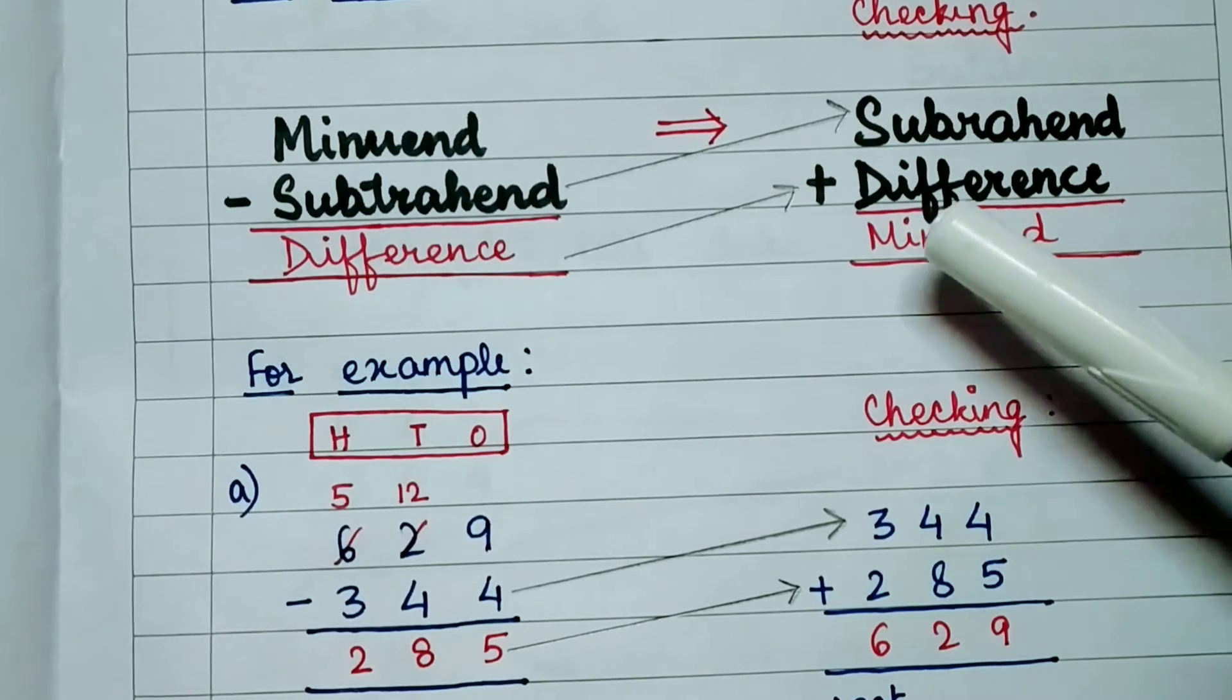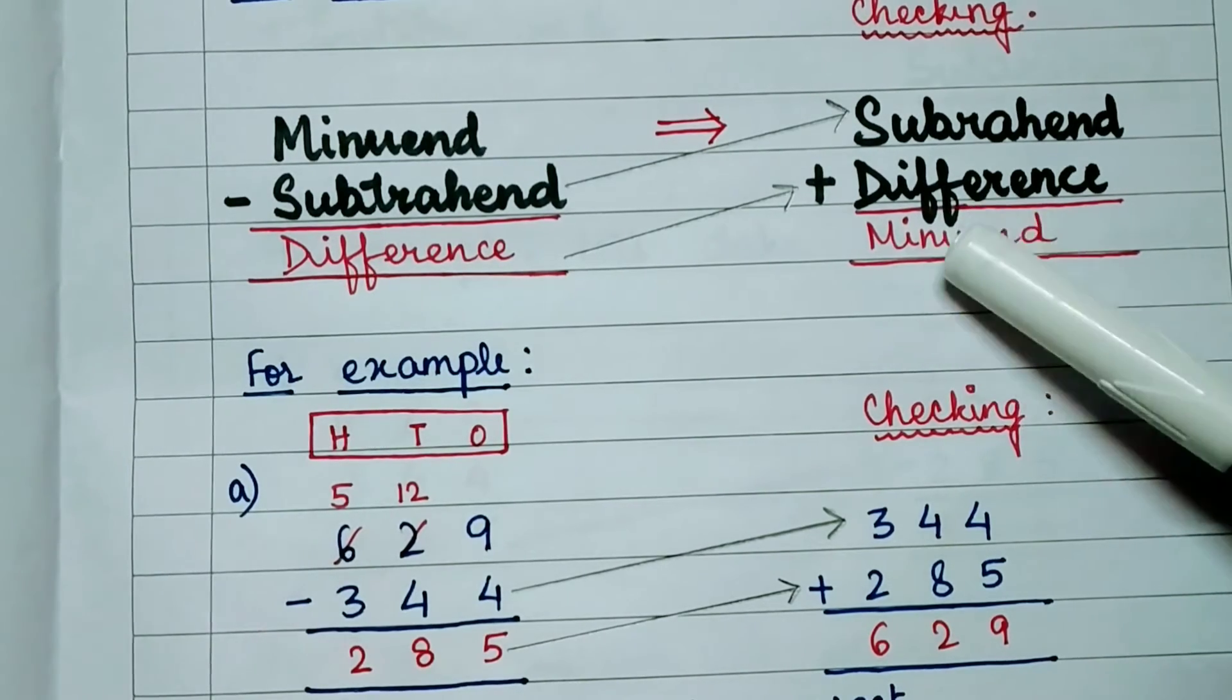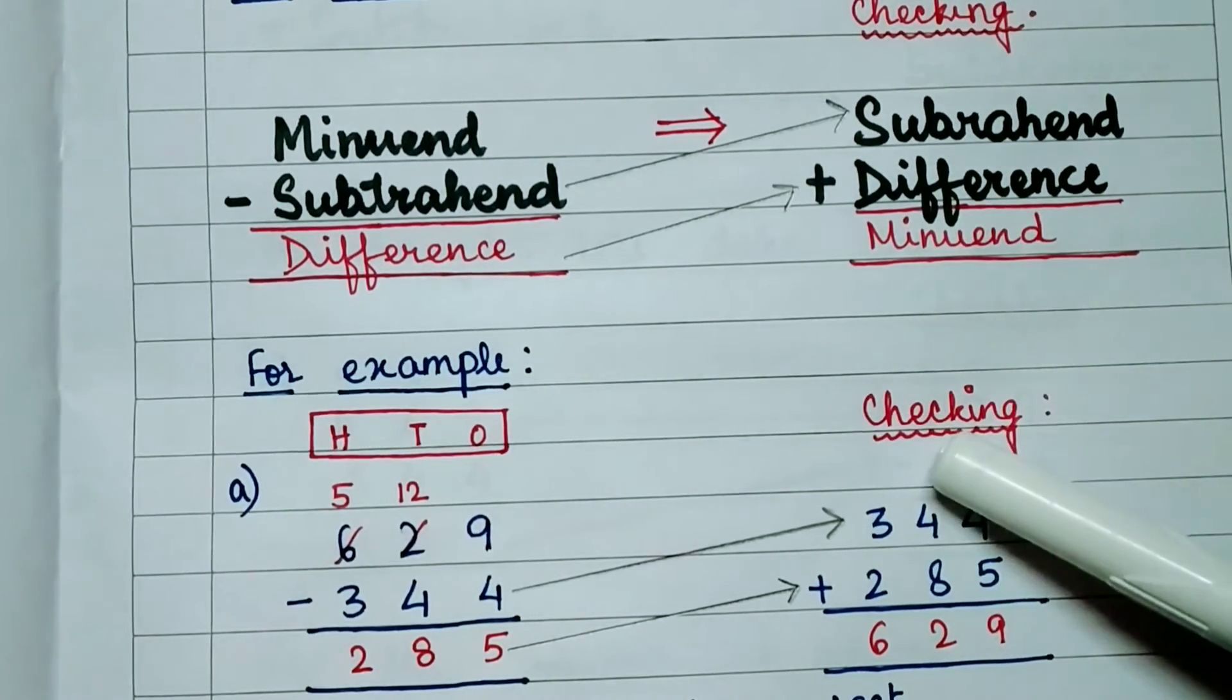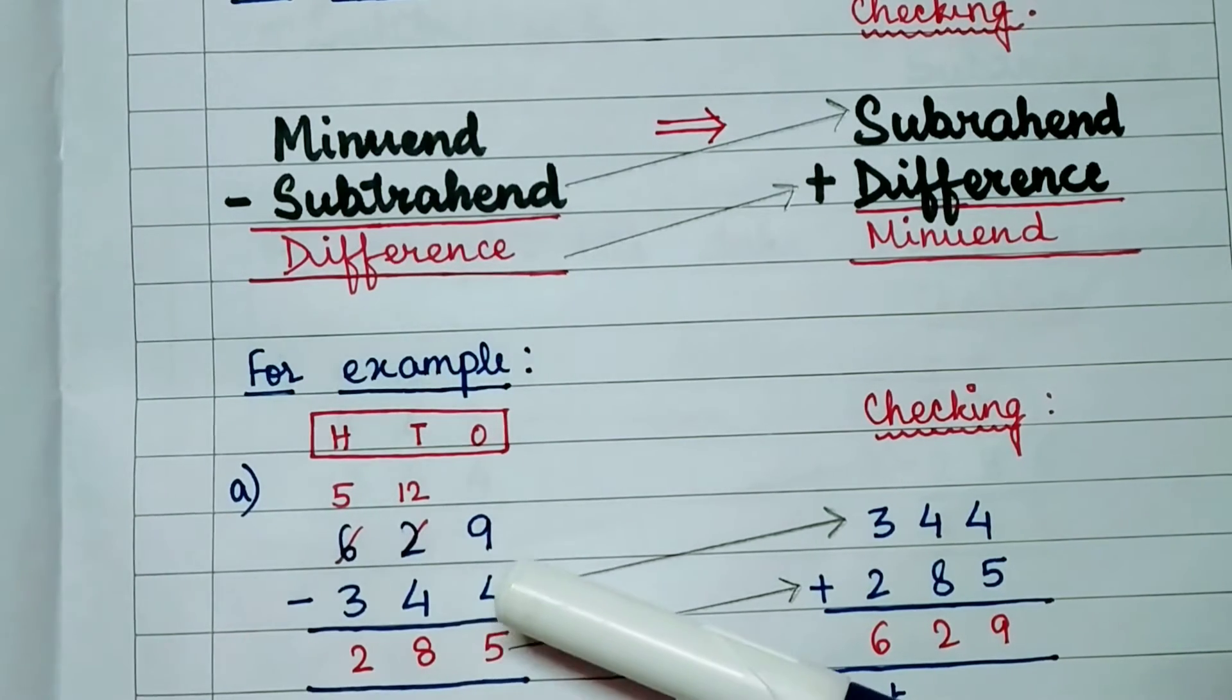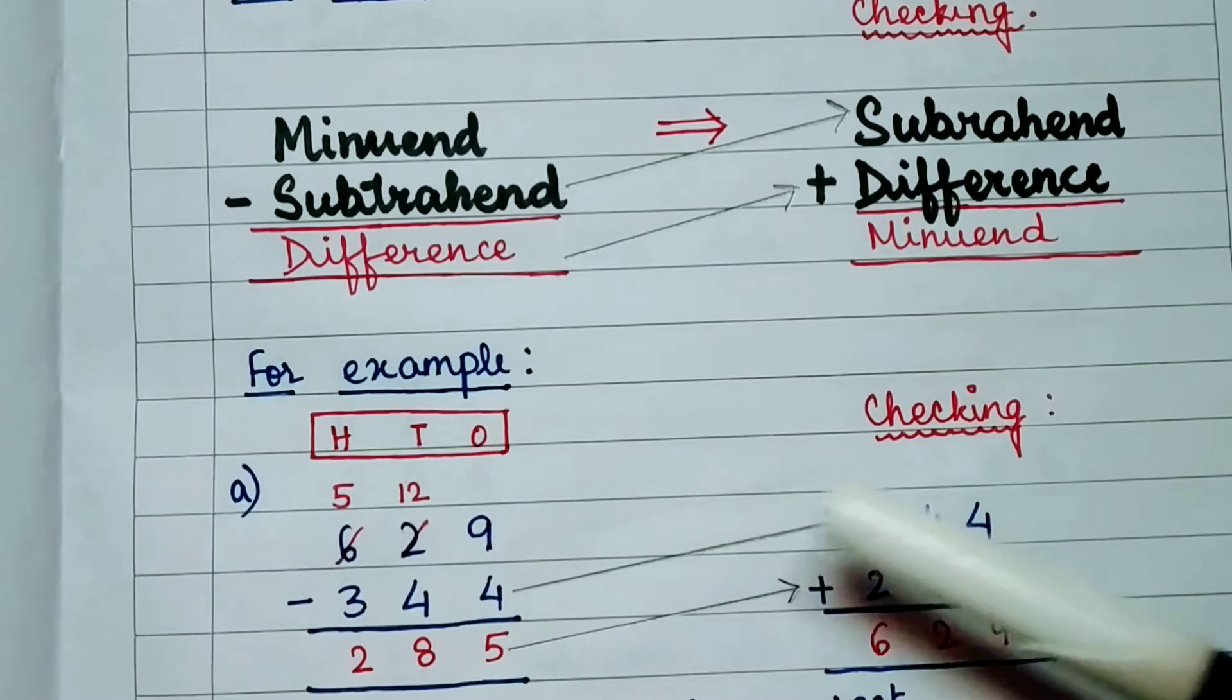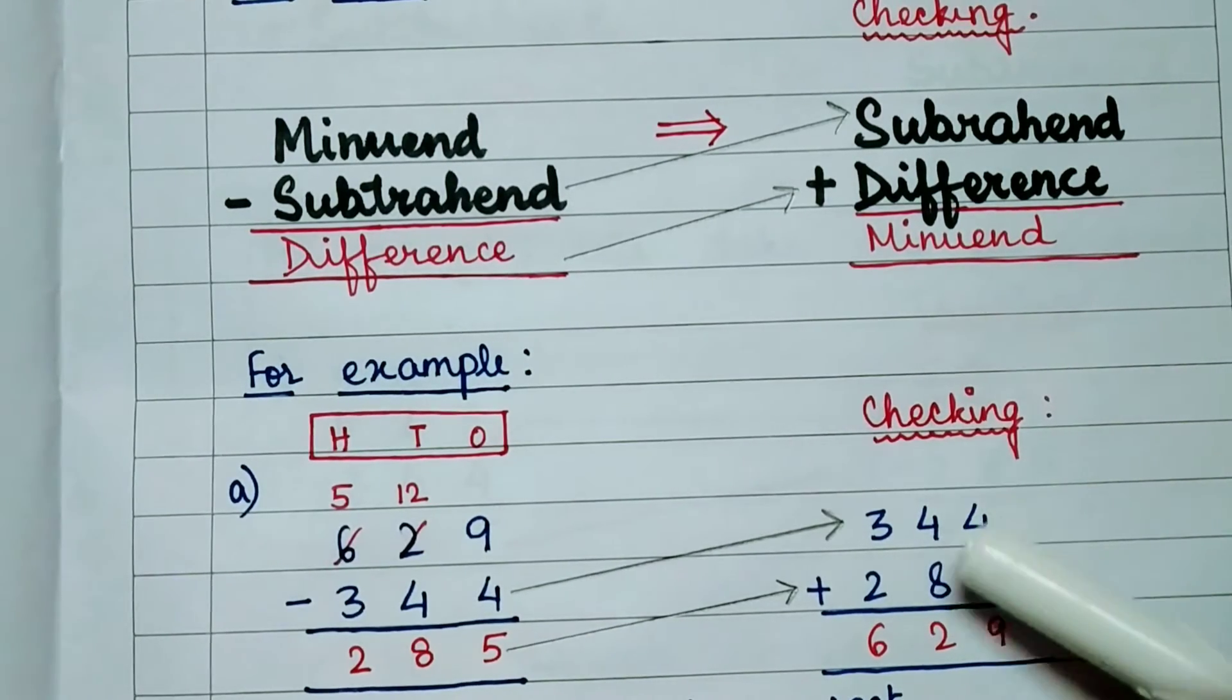Method of addition, that is checking our subtraction with addition. Let us check. In addition method what we will do? We will add the subtrahend and difference. Here we have added.